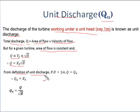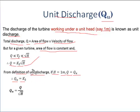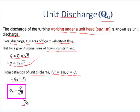Taking the proportionality constant, we get Q = K₂·√H. From the definition of unit discharge, if H = 1 meter then Q equals Q_u. Therefore Q_u = K₂. Substituting this value back, we get Q_u = Q / √H. This equation is known as the unit discharge for the turbine.